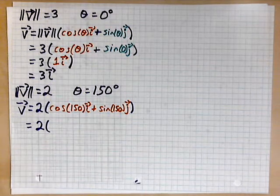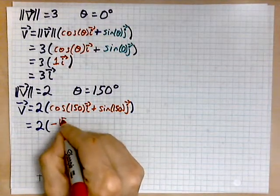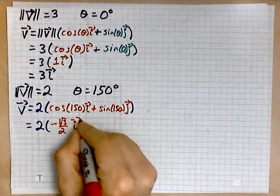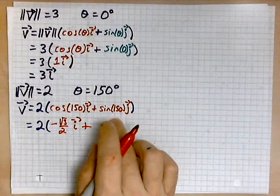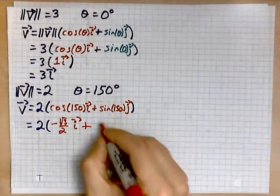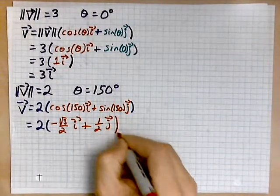You got your 2. And the cosine of 150 is negative root of 3 over 2, and that is i. And the sine of 150 here is 1 half. So, that's a half of j. So, it looks like this.